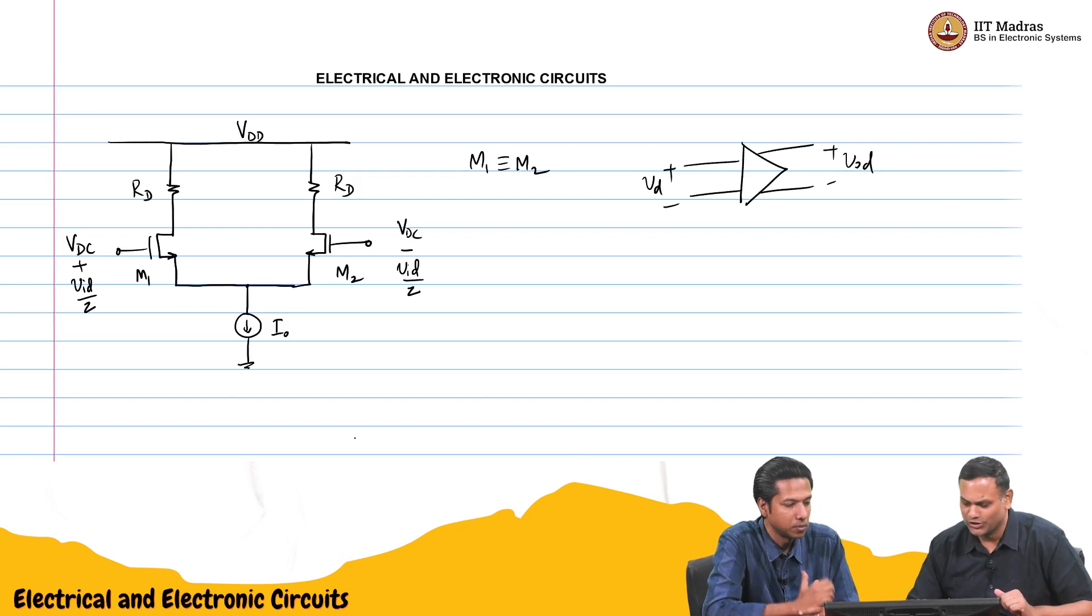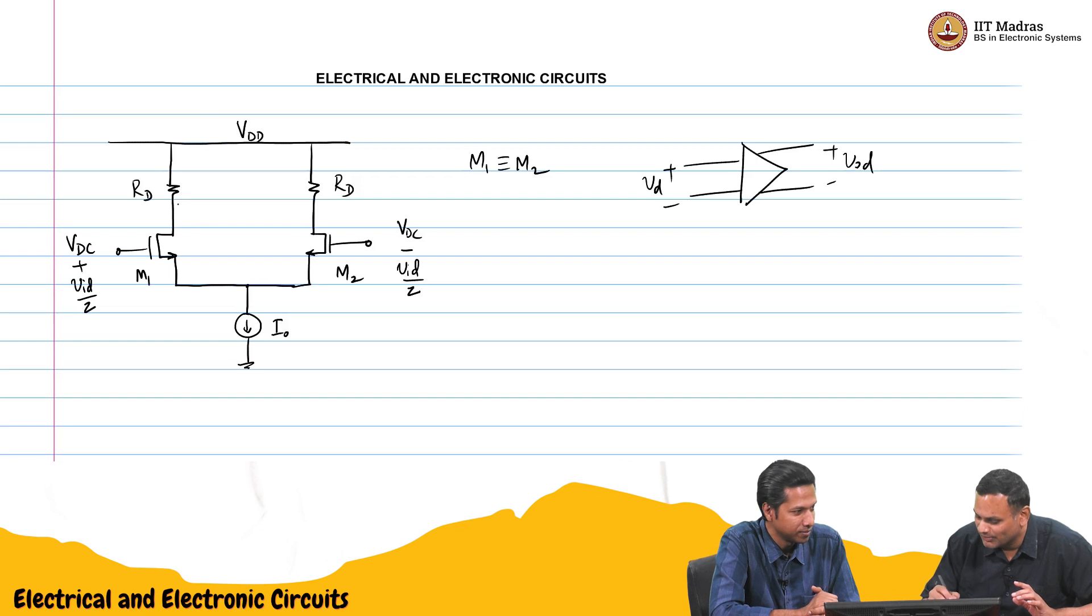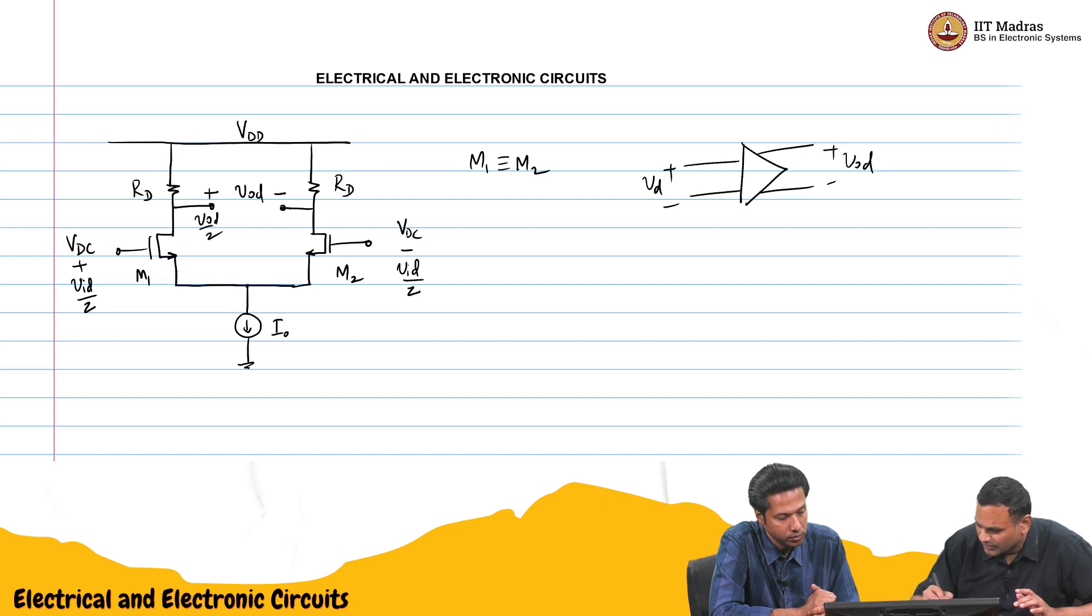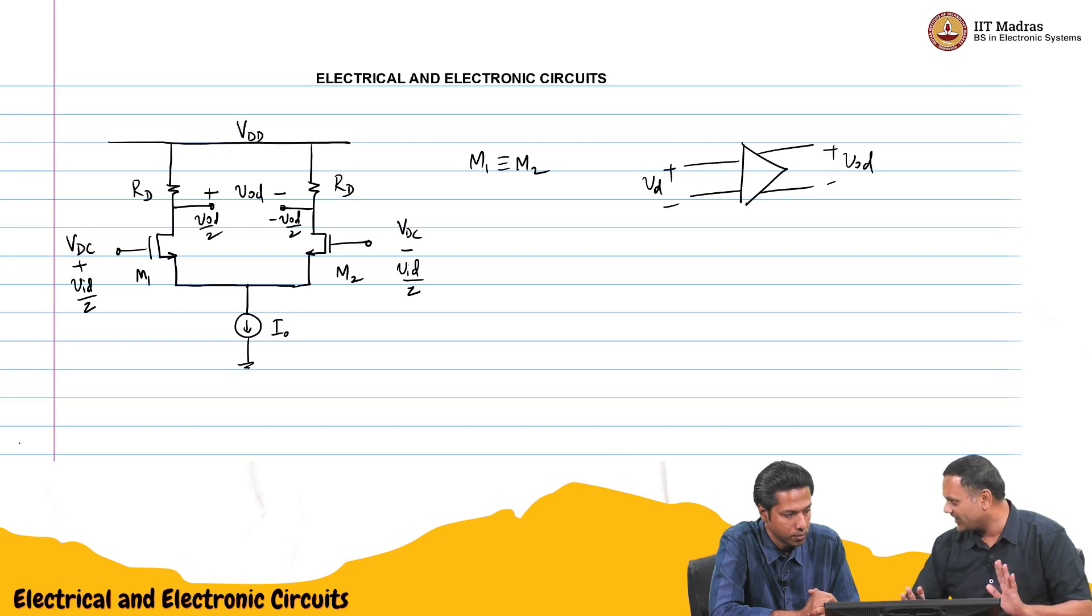Just the output alone will mark. So, you have two outputs and you can take one as positive other as negative. So, this will be VOD. In each half you will get VOD by 2 and minus VOD by 2. So, this is the difference will be VOD. And the gain from VID by 2 to VOD by 2 will be again minus GMRD.